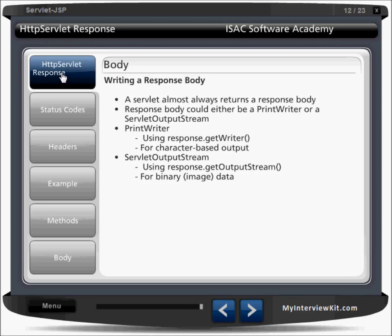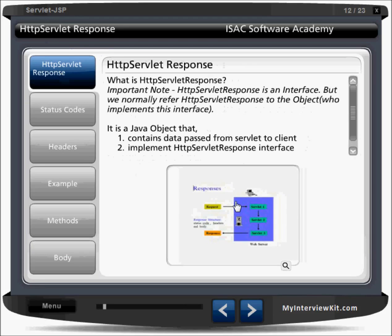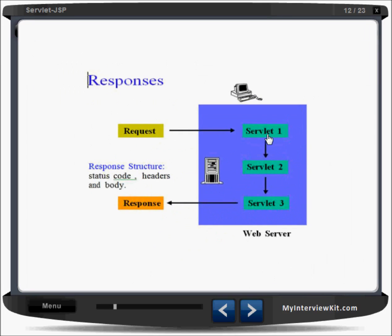Now HTTP servlet response. Whenever a request comes, the container creates two objects — request and response — and passes them to the servlet's doGet and doPost methods. The servlet can transfer this request to another servlet through inter-servlet communication, or it can directly generate a response for the client. We use the RequestDispatcher for inter-servlet communication.